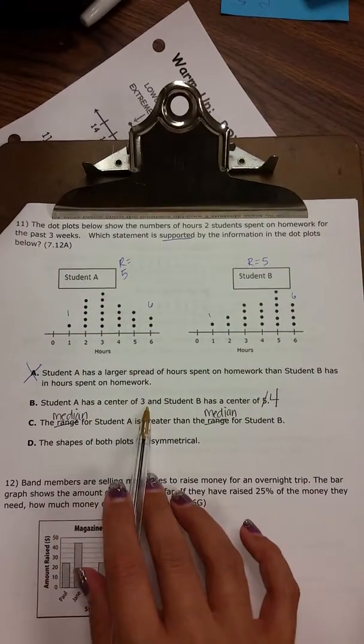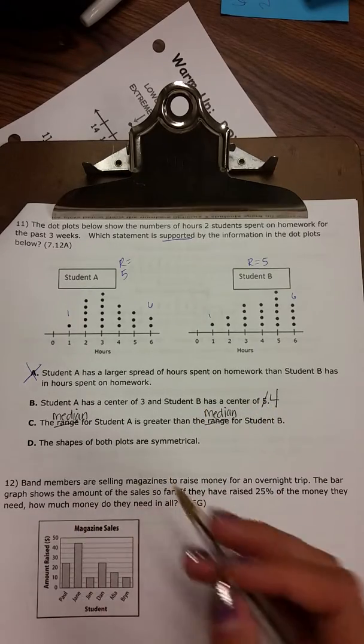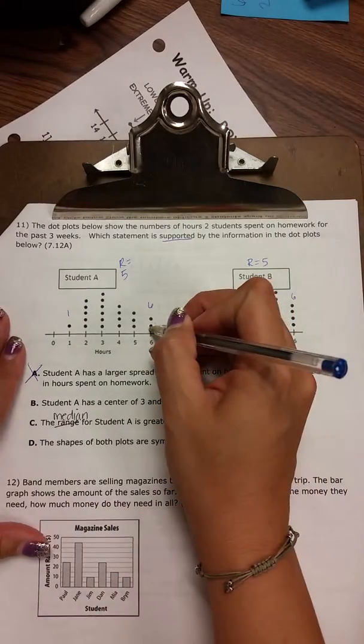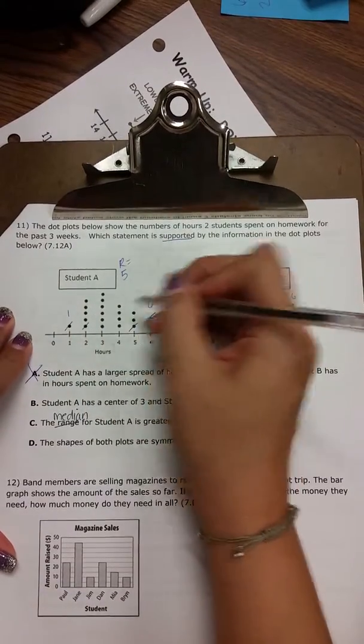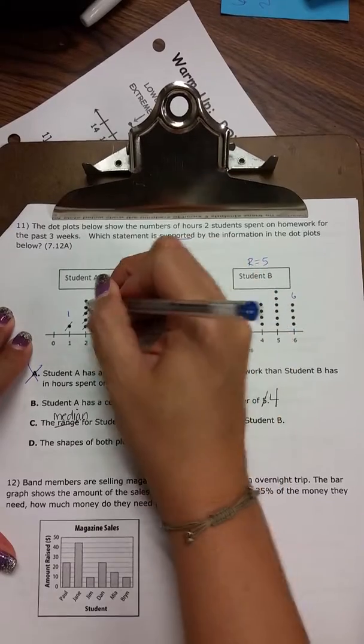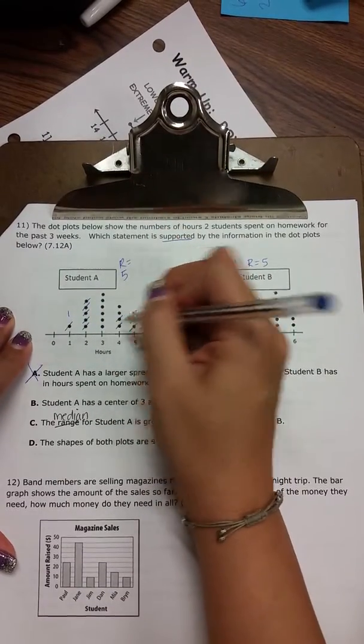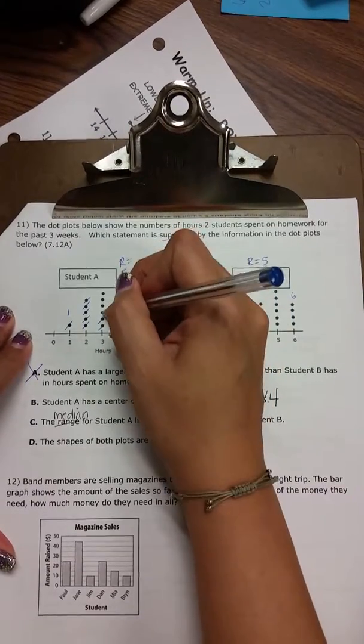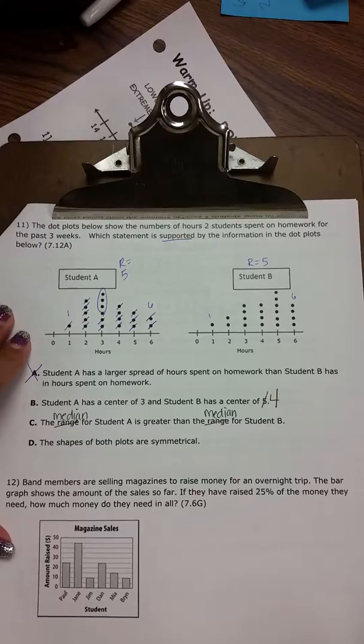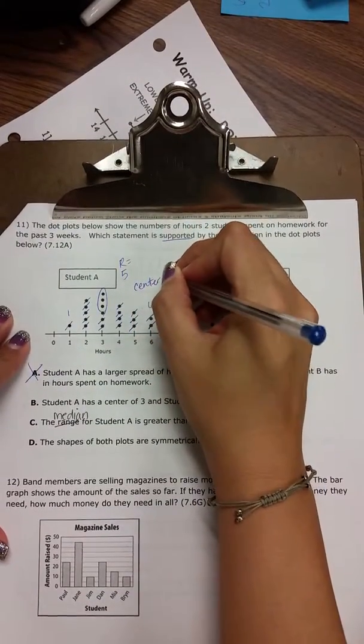B says student A has a center of three and student B has a center of four. So for that, I'm going to take a large and a small and me in the middle to find my center. And really, it's here in the hour of three. So student A has a center of three, also known as the median.